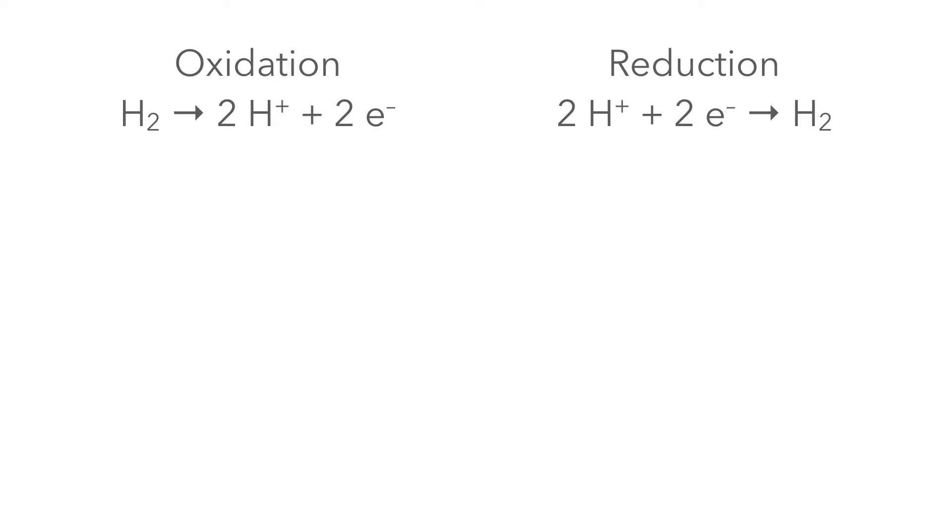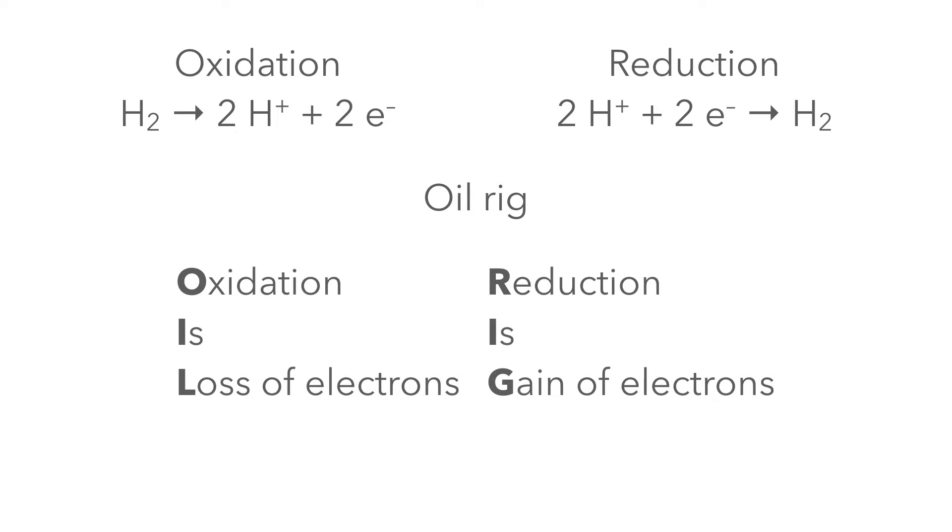Oxidation is the removal of electrons. Reduction is uptake of electrons. You can memorize this with the term OIL RIG. Oil stands for oxidation is loss of electrons, and rig stands for reduction is gain of electrons. A reducing agent reduces something else and gets oxidized itself. An oxidizing agent oxidizes something else and gets reduced itself.